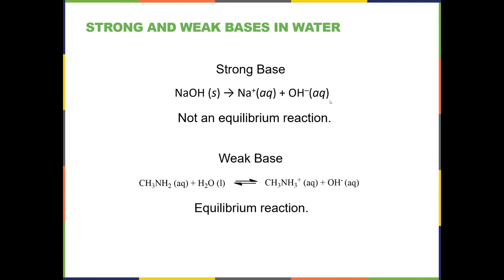Now let's look at a weak base. This compound is methylamine, CH₃NH₂. If we draw its Lewis structure, we see there is a lone pair on the nitrogen, and that lone pair is capable of accepting H⁺ because the electron pair can interact with a proton. So H₂O donates a proton to CH₃NH₂, giving us CH₃NH₃⁺ — it went from two H's to three H's and gained a positive charge.